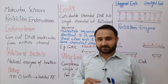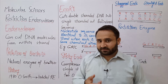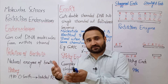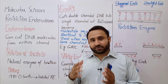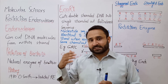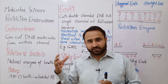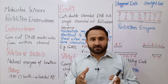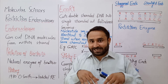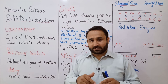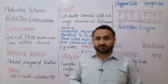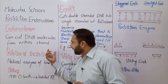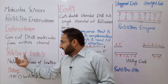Restriction endonucleases are enzymes. There are also enzymes called exonucleases. Exonucleases are those enzymes which can cut DNA from the ends — they remove nucleotides from the terminal ends. In contrast, endonucleases cut the DNA molecules from within the strands. So endonucleases cut from within the DNA molecules, while exonucleases cut from the ends.